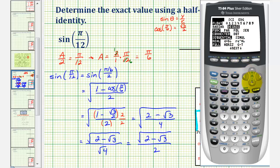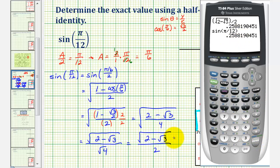So we'll press the mode key, go down to the third row, highlight radian, press enter. And second mode for quit, and now we'll press sine pi divided by twelve. And notice how this verifies our work is correct.